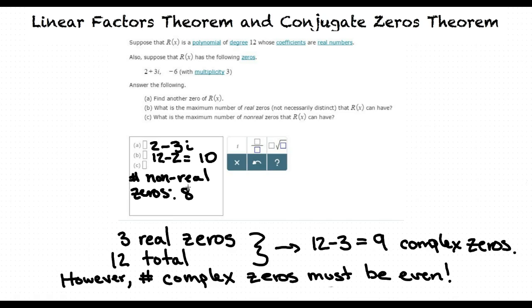Oh, okay. So, we first determine the complex conjugates of the complex zeros given to us, assuming they are not also given. Then, using the degree of the polynomial, as well as the known numbers of real and complex zeros, we find the maximum number of possible real and complex zeros, right? That's exactly right. Good job.